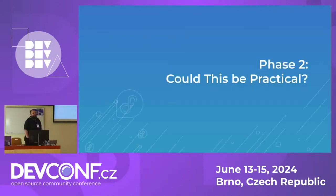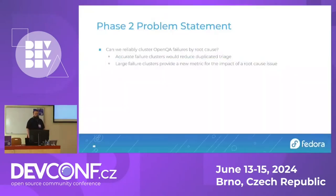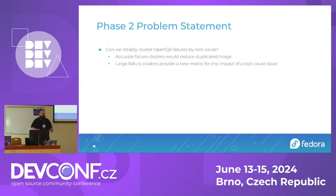But this does lead into the second phase: could this idea be practical? What is the next part of the research we want to do? I would change the problem statement to: can we reliably cluster these failures by root cause? When I say that, it's basically trying to group failures. So if today's jobs have 100 failures, maybe five of them are the same root cause spread across a couple of different packages or in a couple of different ways.